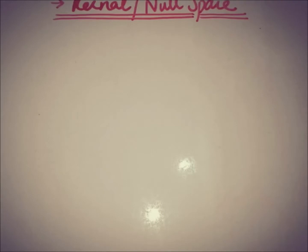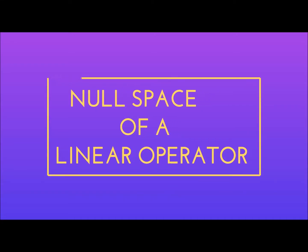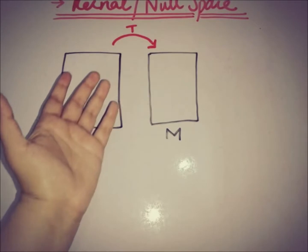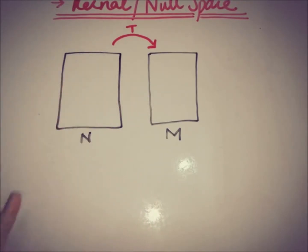Everyone, this is from eAcademy. Today we are going to see what is a kernel or null space of a linear operator. In the previous video we talked about what is a linear operator, so here we have T, a linear operator from N to M, and now we are going to define what is meant by a kernel or null space.